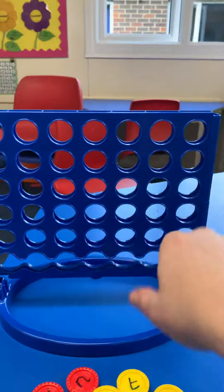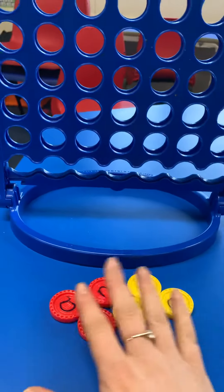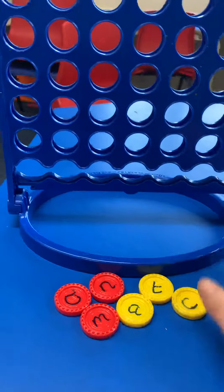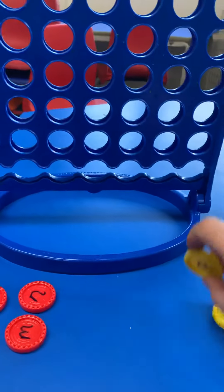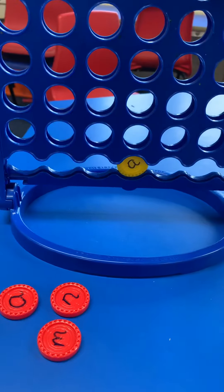Times tables, counting in tens, that sort of thing. It could be seen like an abacus. But yes, so today's lesson I've got some letters here and if I'm the yellow team and the child's the red team.